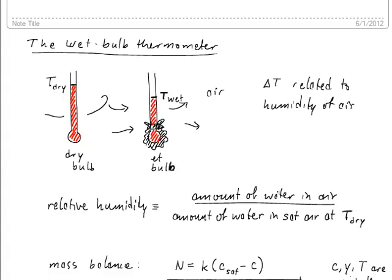So first we should probably define what is a humidity and usually you see this reported in terms of a relative humidity. That is the amount of water in the air divided by the amount of water that would be in air that was saturated at the dry or at the ambient temperature.